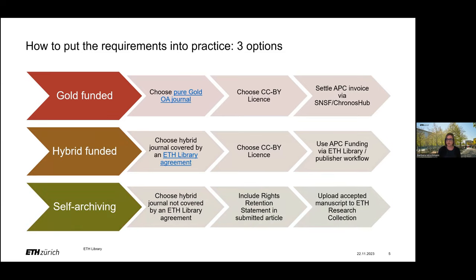The third option, self-archiving, comes into play if there is no option for funding an APC through either the SNSF or ETH library. In this case, you can still try to ensure that your article will be open access immediately without any costs by using the so-called rights retention strategy and posting the paper on a repository such as the Research Collection with a CC BY license. This option is what I will explain in more detail on the next slides.